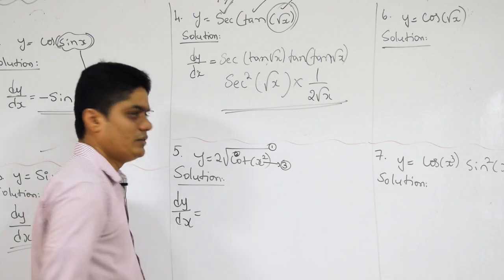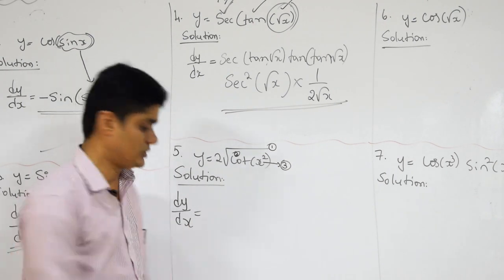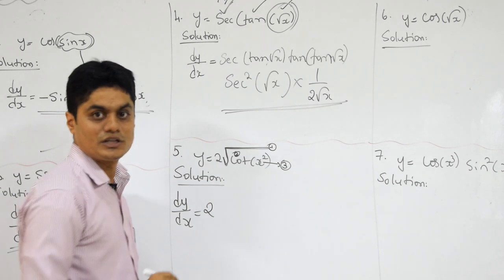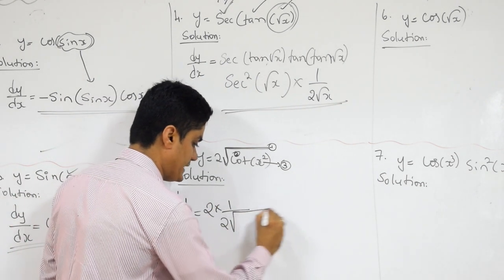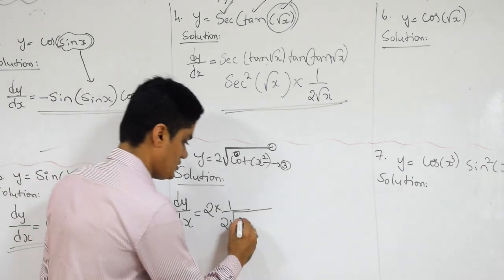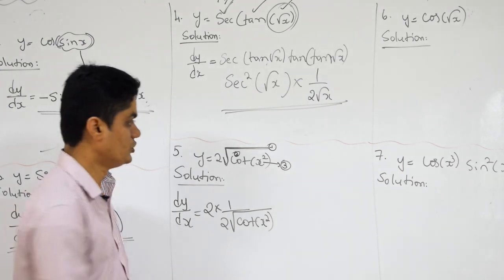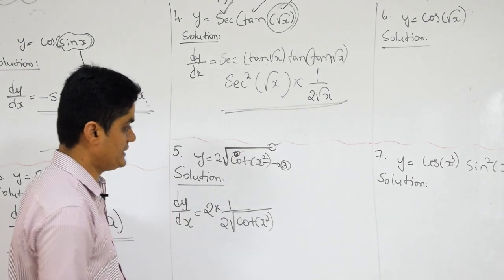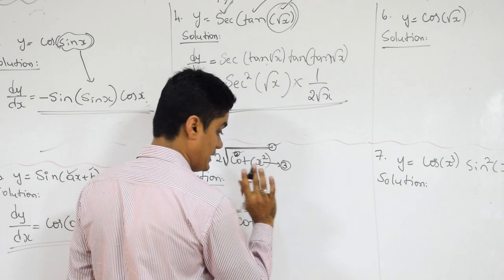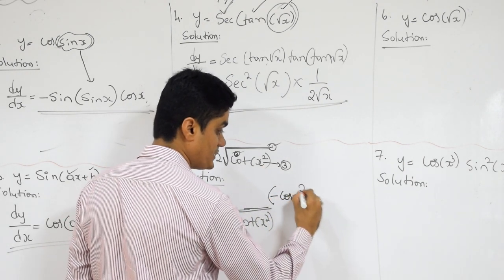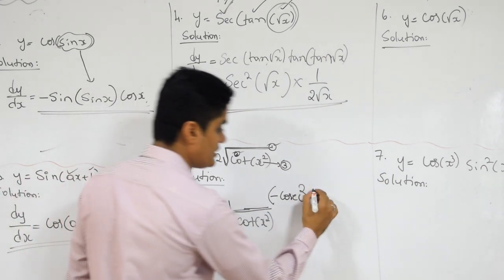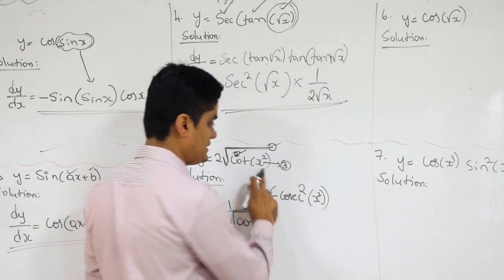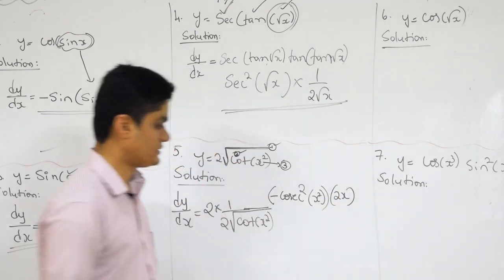DY by DX is equal to. What to do with this 2? 2 is just a constant, so it will come as it is. Then derivative of root X: 1 by 2 root X. Instead of X, what we have? Cot of X squared. Outermost derivative is done. Next, derivative of the next outermost — that is cot. What is the derivative of cot? Whenever minus comes, put bracket, otherwise it will look like 2 functions. Cosecant squared of X squared. Last one remaining — the innermost function: derivative of X squared is 2X. Done.